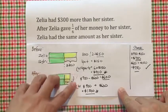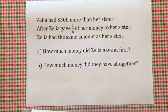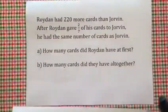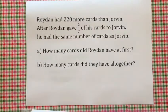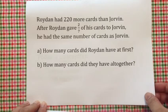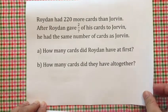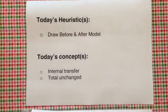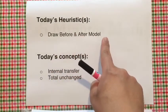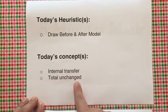Remember to put down the question at the side. Now that you have understood this, let's try to do another question on your own — I will not go through this with you today. In the next lesson, I will begin with this solution. You can always pause here and try the question on a piece of paper. In today's lesson, we learned how to draw a before and after model, and we also learned these two concepts: internal transfer with the total unchanged.